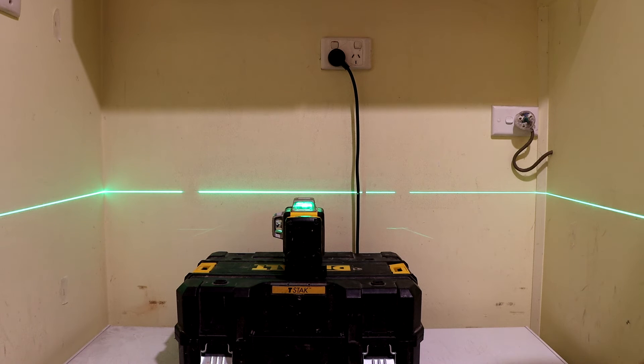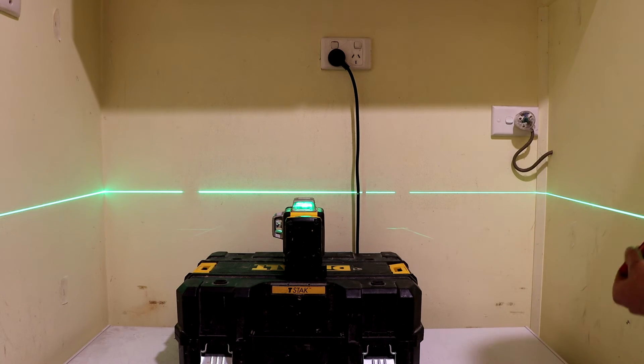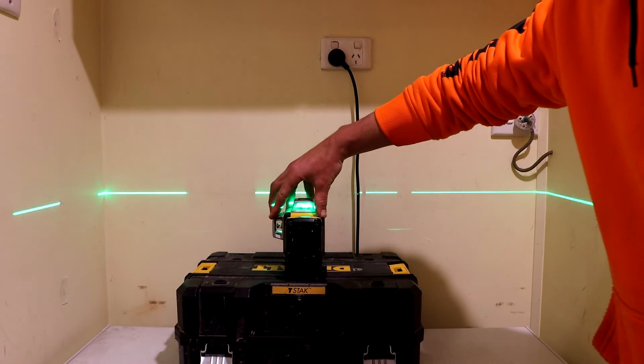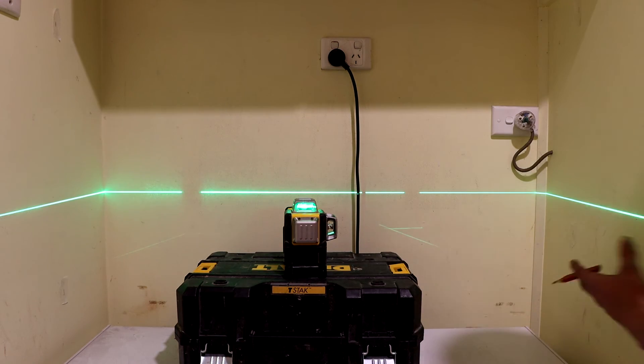To check our horizontal laser line, it's going to be the exact same process—doing a mark at one point of the wall, another point of the wall, on both sides. Then we'll just rotate the laser around 90 degrees and check if these points correspond.